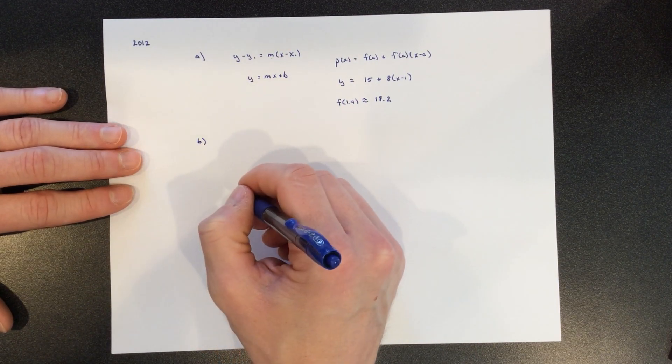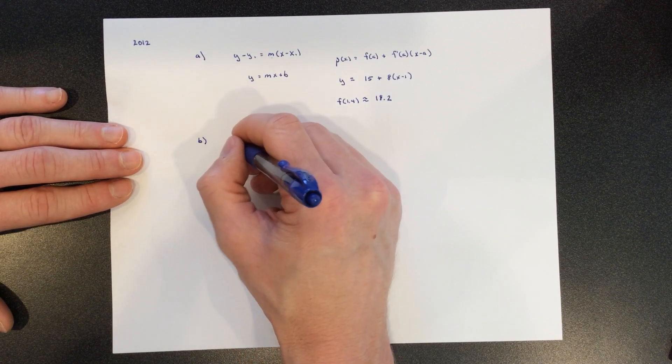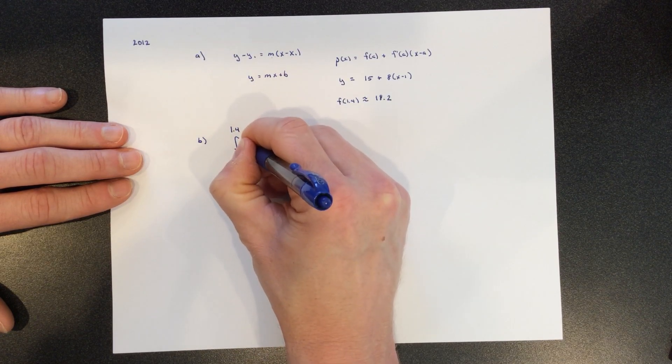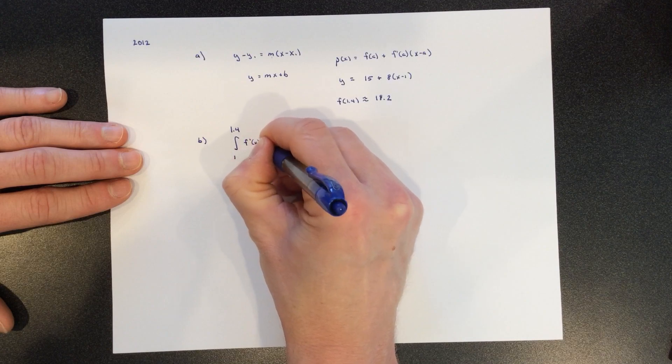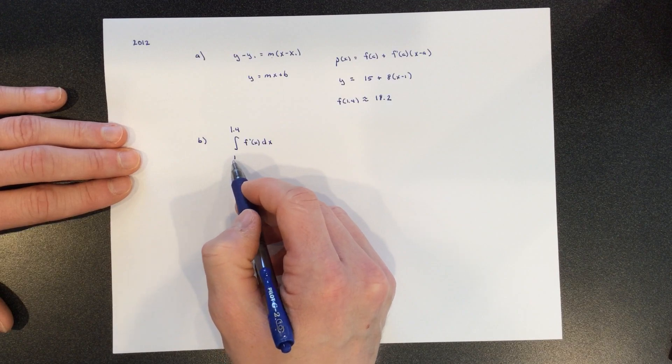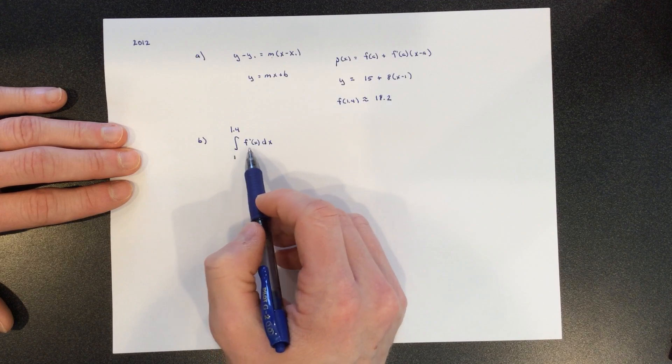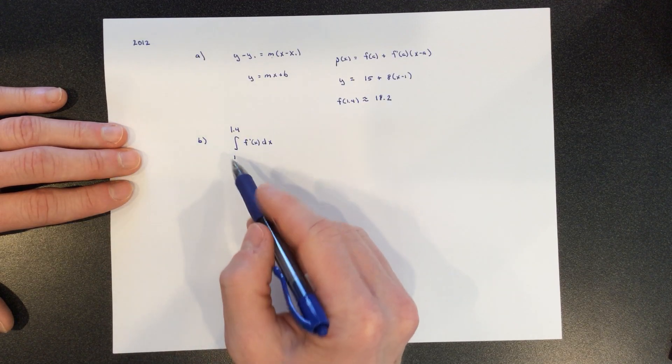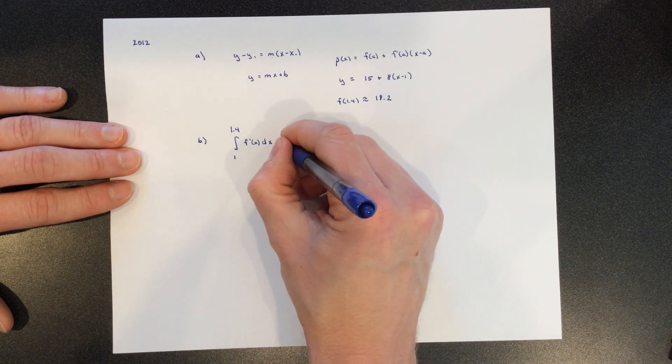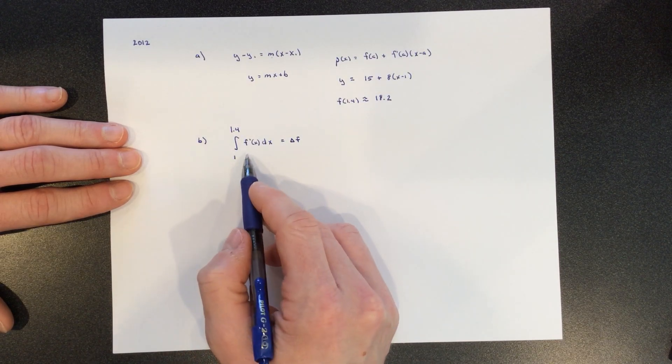Part B says use a midpoint Riemann sum with two subintervals of equal length and values from the table to approximate this. So just as a reminder, what is this integral? What do you get when you integrate the derivative from 1 to 1.4? Well, you get the change in the function, right? This is integrating f prime. f prime is the rate at which you change, and so integrating that derivative gives you that accumulation, which is equal to then the change in f over that time span. Okay, we can't actually do the integral, but we can find the midpoint.